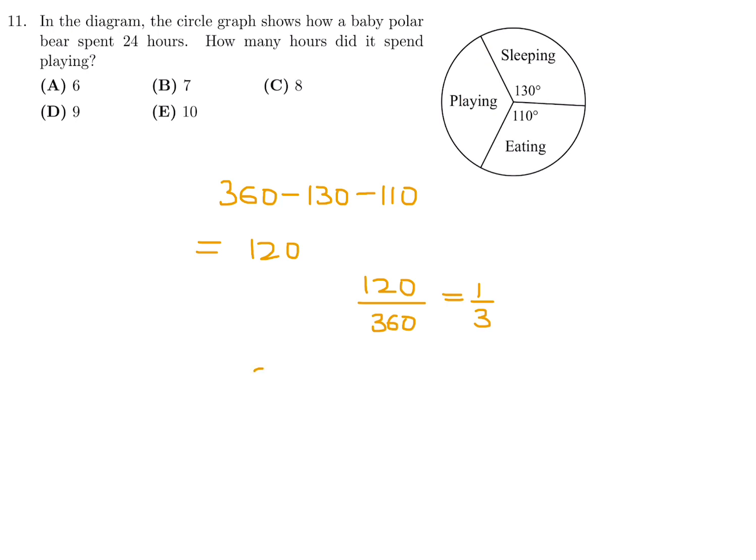The entire circle is 24 hours. So one-third of 24 hours, which is 8, is how many hours the baby polar bear spent playing. So number 11, the answer is C.